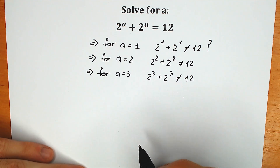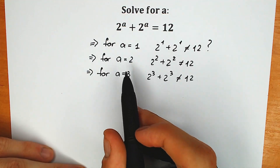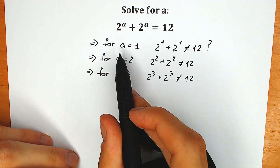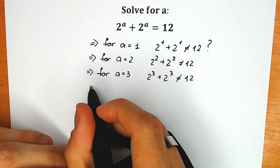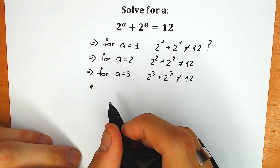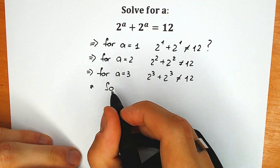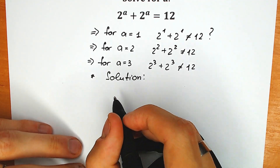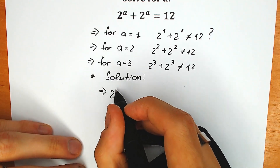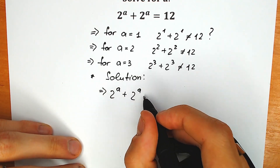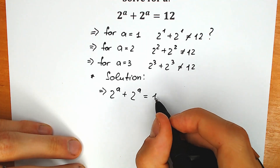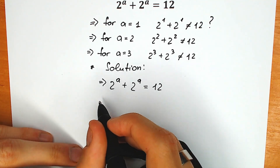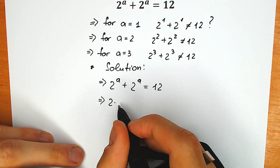Right now let's try to solve this question correctly with a proper solution. Inspection is not a method — it's like a check. Right now let's think about a solution. So I'm going to rewrite the equation: 2 to the power a plus 2 to the power a equal to 12. Now, 2 to the power a plus 2 to the power a, if we add it, we have 2 times 2 to the power a.